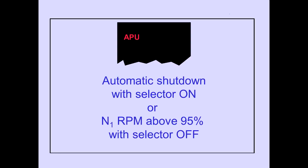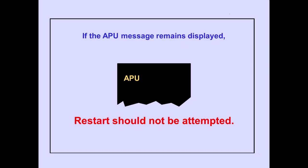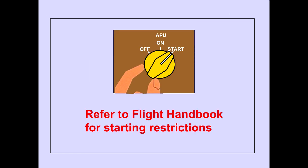The EICAS advisory message, APU, is displayed when an automatic fault shutdown occurs with the APU selector on, or when APU N1 RPM is above 95% with the APU selector off. If a fault occurs, the APU shuts down automatically without the normal delays for cool-down. If the APU message remains displayed, restart should not be attempted. Rotating the APU selector off removes the EICAS message. With the message removed, the APU may be restarted. Refer to the operations manual for starting restrictions.